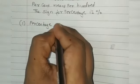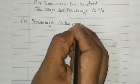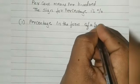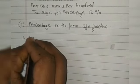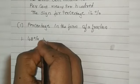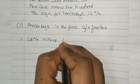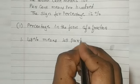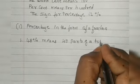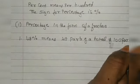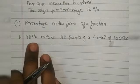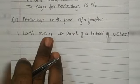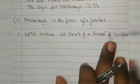Percentage in the form of a fraction. 48 percentage means 48 parts of a total of hundred parts. So, 48% means 48 out of hundred.